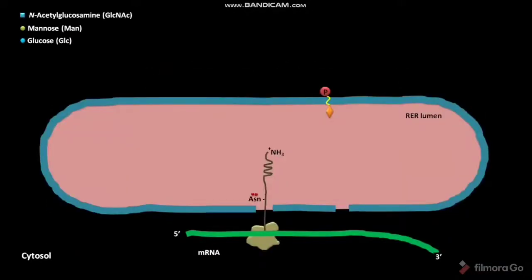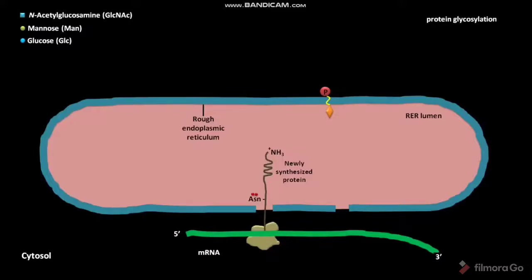This is the rough endoplasmic reticulum, or RER, in a eukaryotic cell. In the RER lumen, the newly synthesized proteins are modified in several ways. One of them is protein glycosylation — it is a co-translational modification of protein. Let us discuss what happens during this process.